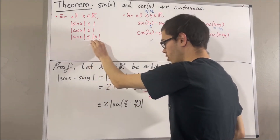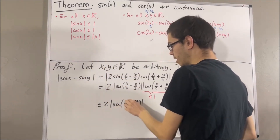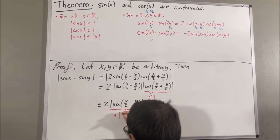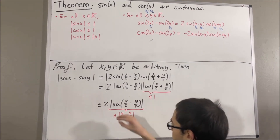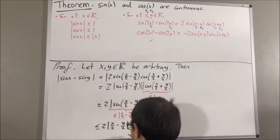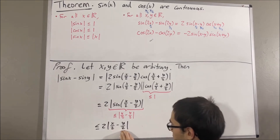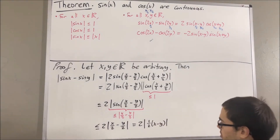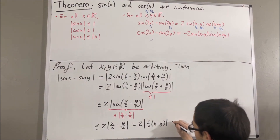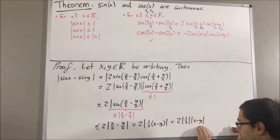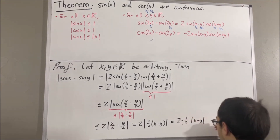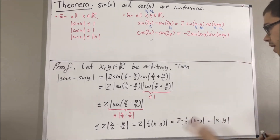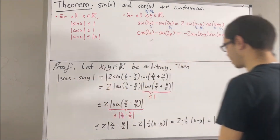Applying this result, we know that the absolute value of sine of (x over 2 minus y over 2) is less than or equal to the absolute value of (x over 2 minus y over 2). That tells us this entire thing is less than or equal to 2 times the absolute value of (x over 2 minus y over 2). Inside the parentheses, we factor out 1 half. By the multiplication property of absolute values, the absolute value of 1 half is just 1 half, so this equals the absolute value of x minus y. We have shown that the absolute value of sine x minus sine y is less than or equal to the absolute value of x minus y.